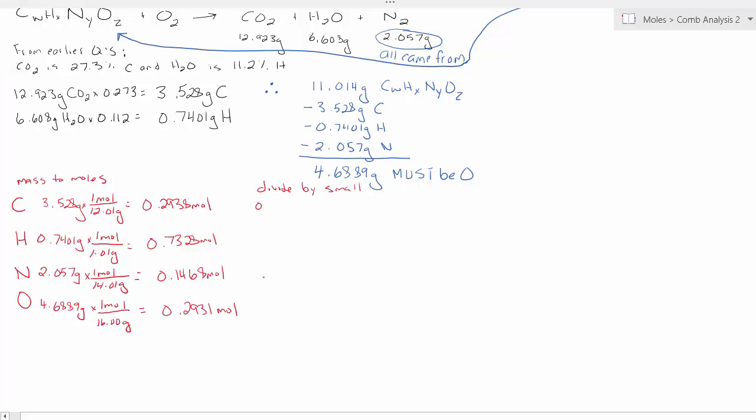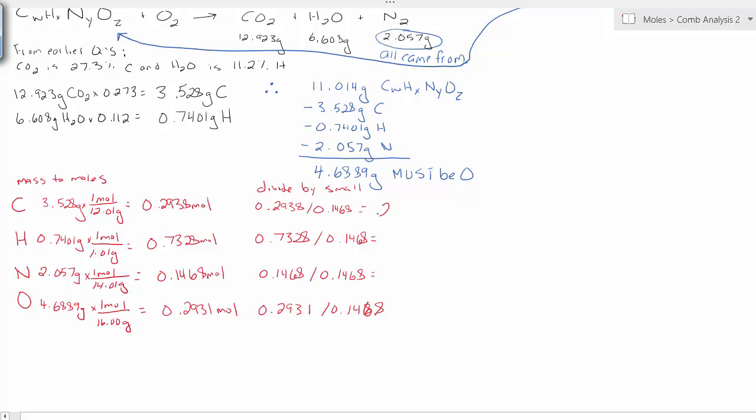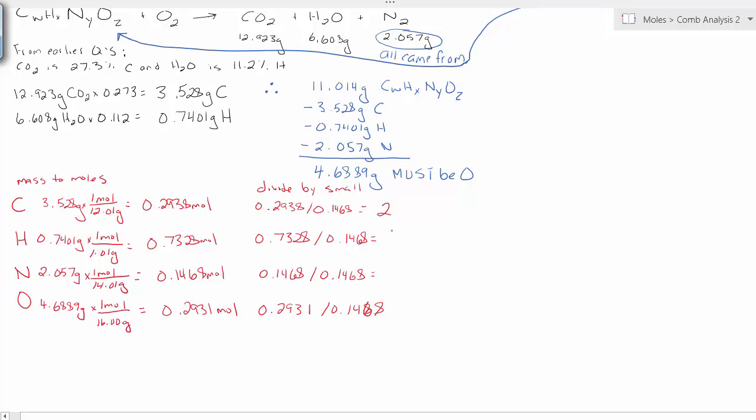Divide by small. We're going to divide everything by 0.1468. Remember, this step will either give you whole numbers, or very close to whole numbers, or it'll give you the common decimals. So 2.001 is 2. 4.99 is really 5. 1 and then 2.